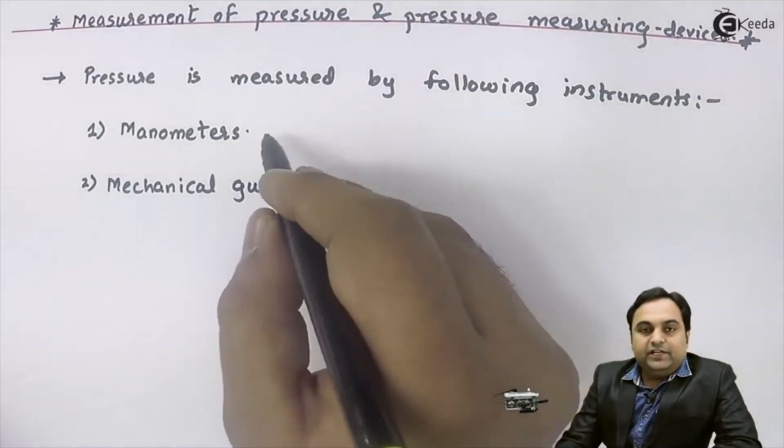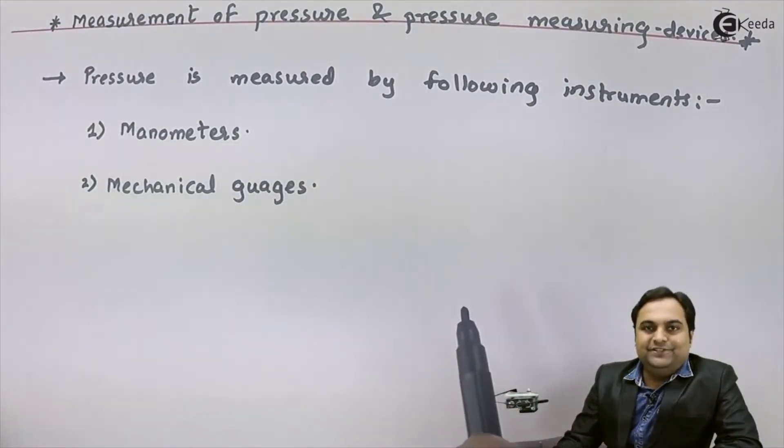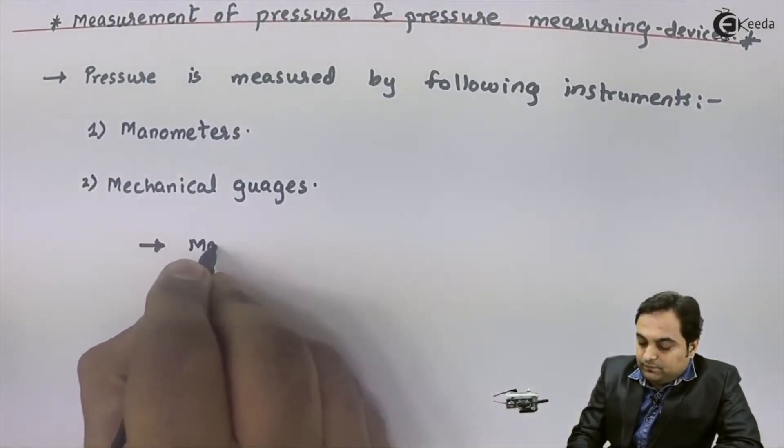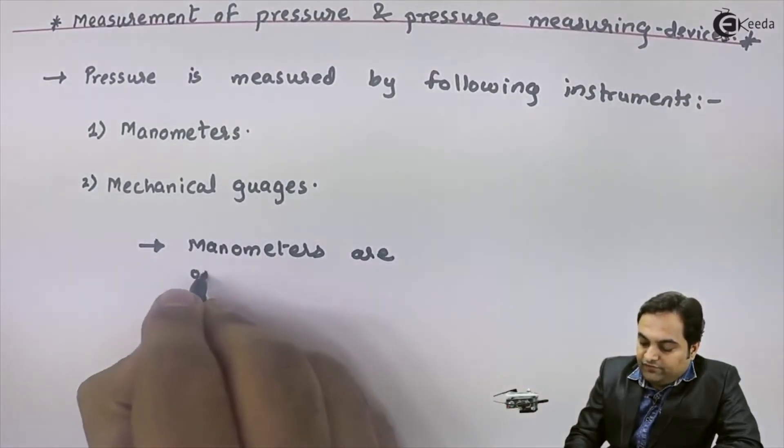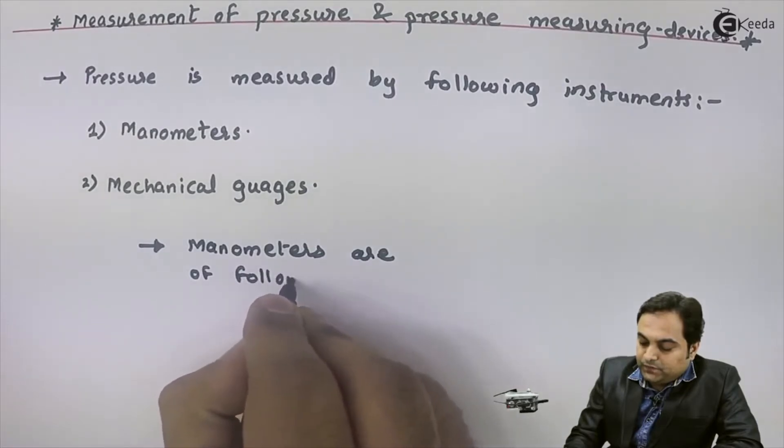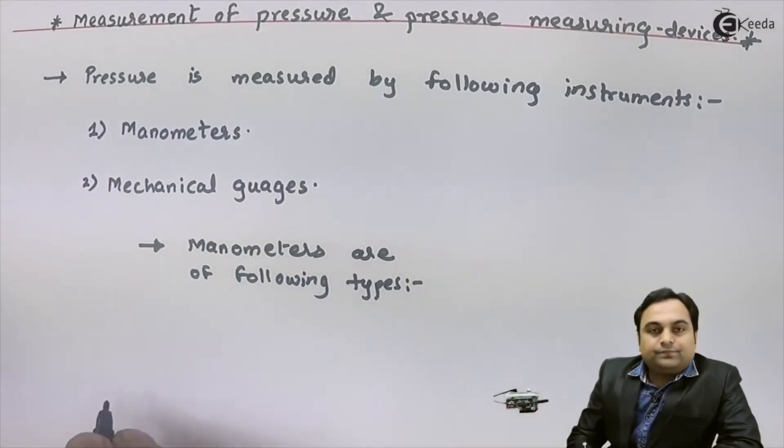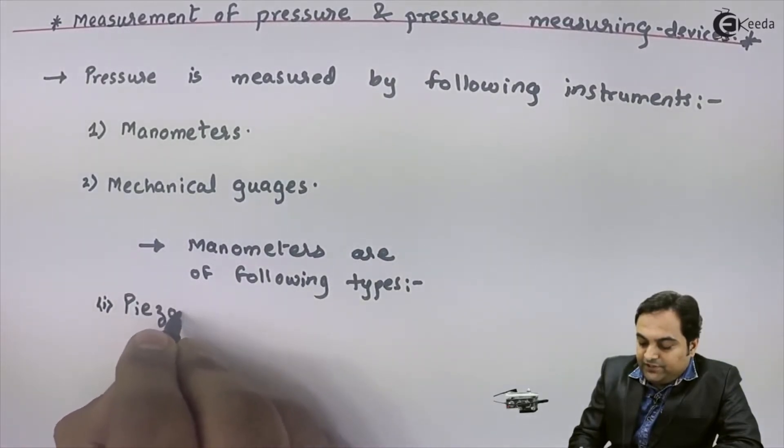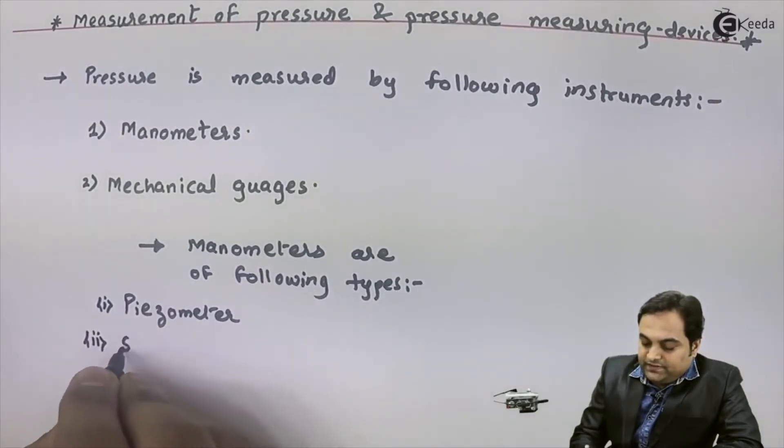These are two commonly used pressure measuring devices with the help of which we can measure pressure of any kind of fluid. Manometers are of following types: we have piezometer as the simplest form of manometer, then there is simple